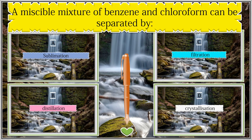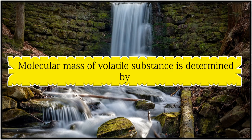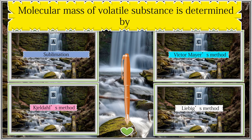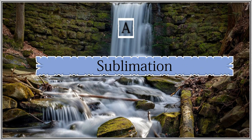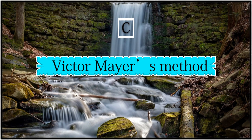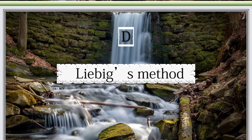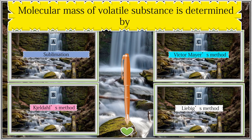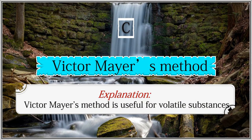The molecular mass of a volatile substance is determined by: (A) sublimation, (B) Kjeldahl's method, (C) Victor Meyer's method. The answer is Victor Meyer's method. Victor Meyer's method is useful for volatile substances.